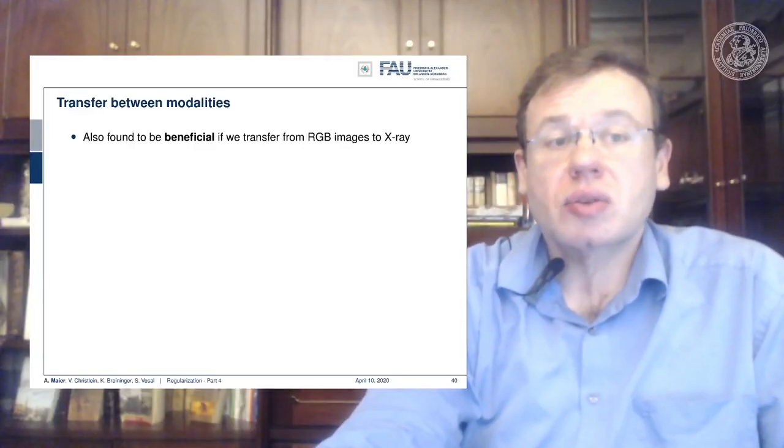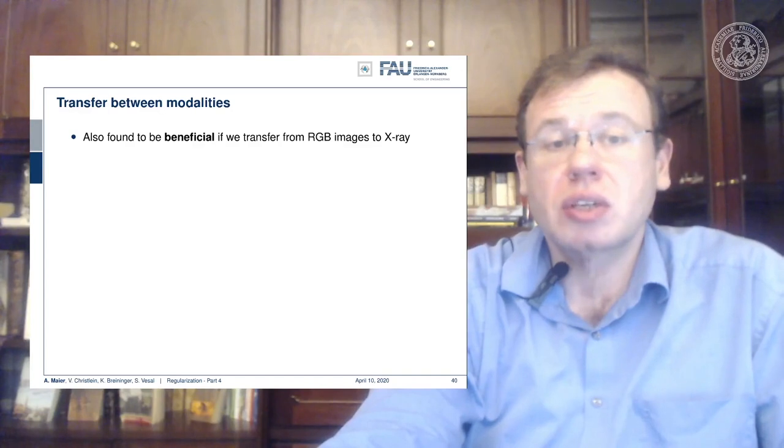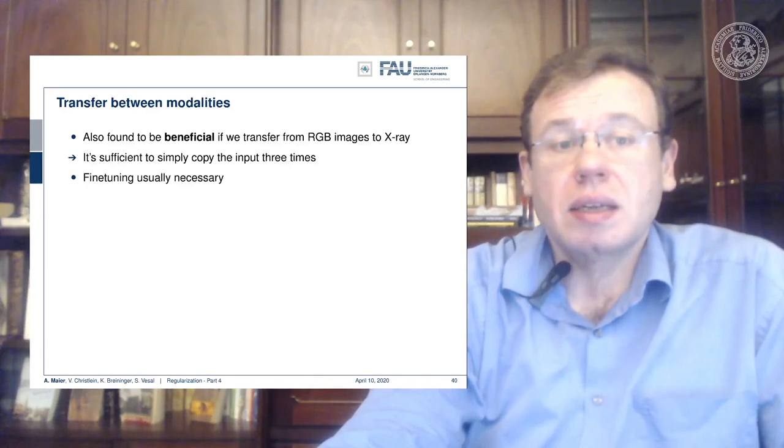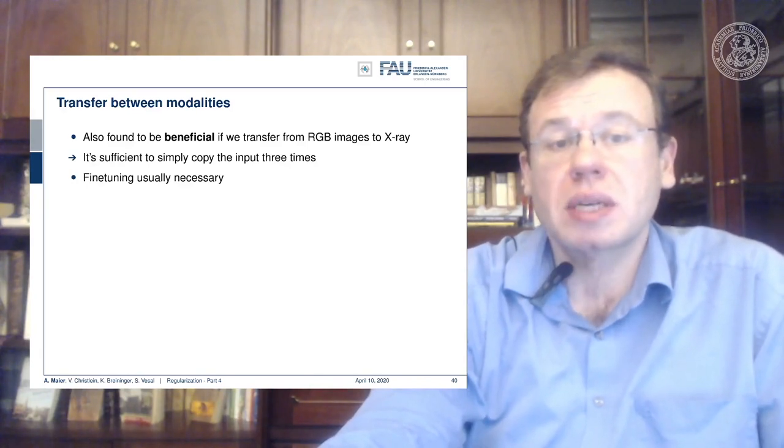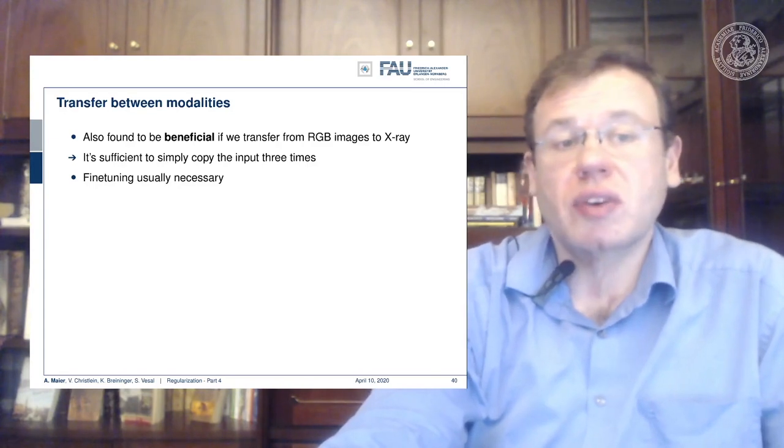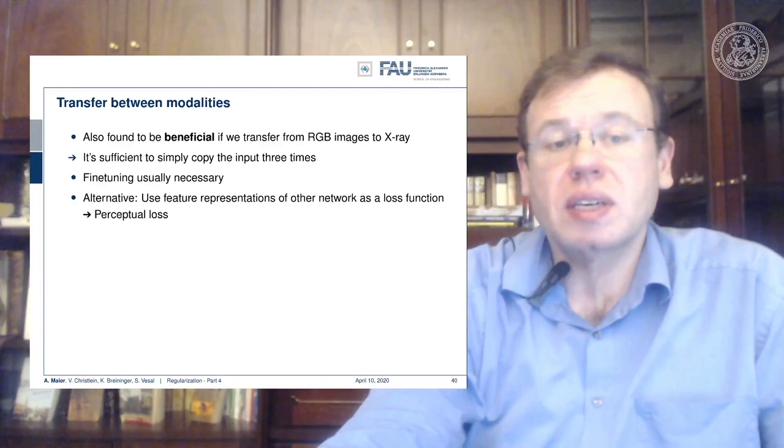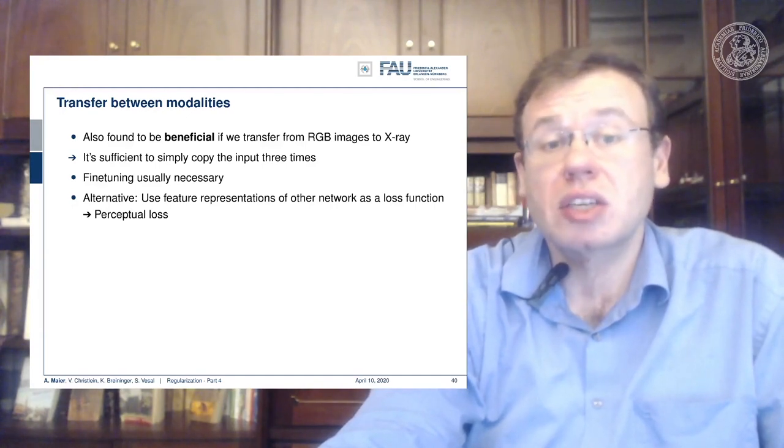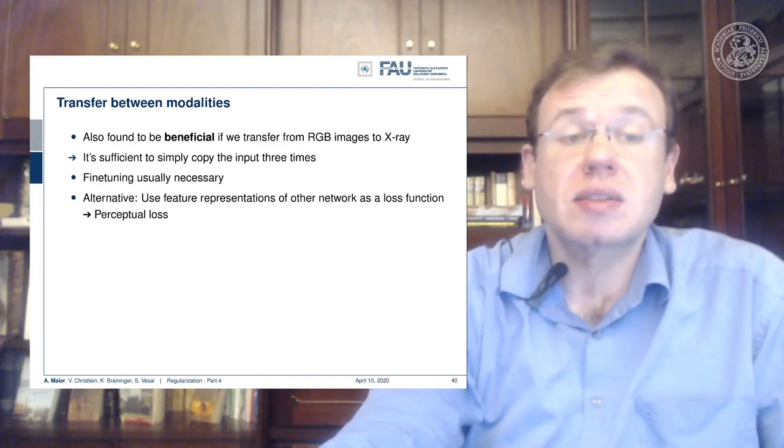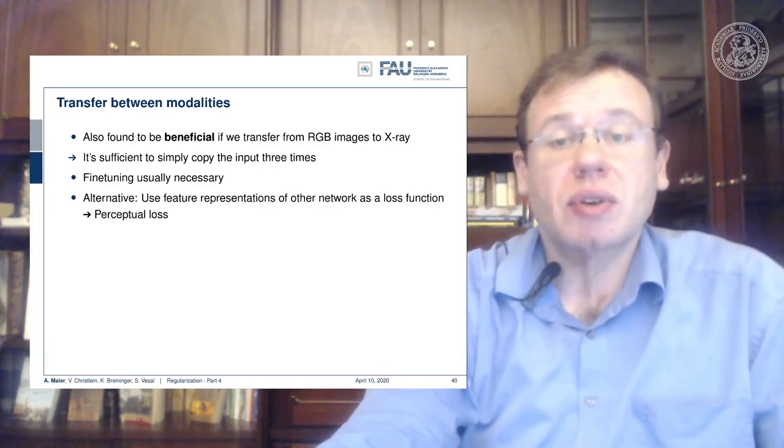So there's also transfer between modalities. This was also found to be beneficial. Now you can transfer from RGB images to X-ray. And here it's actually sufficient to simply copy the input three times, and then you don't need that much fine-tuning. So this works pretty well. One alternative is that you use feature representations of other networks as a loss function. This then leads to perceptual loss. We will talk about perceptual loss in a different video.